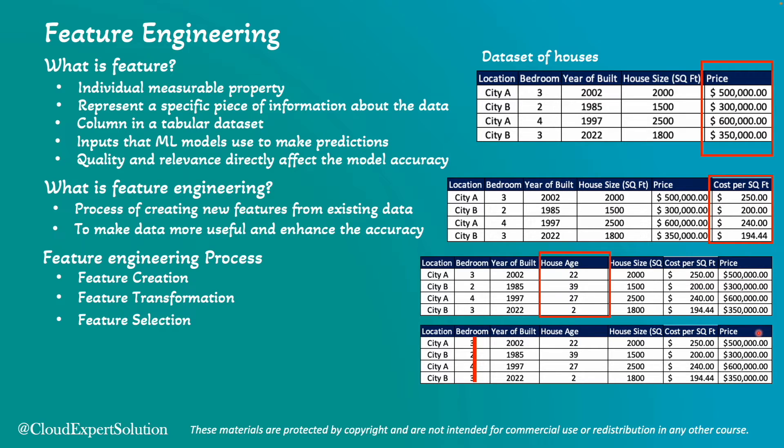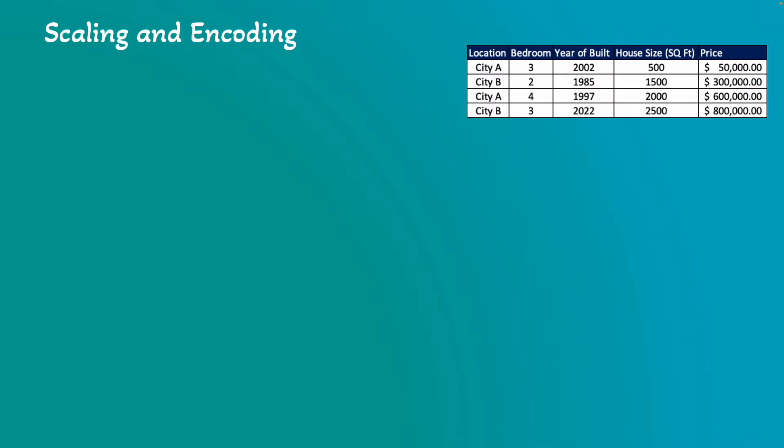Other feature engineering techniques are scaling and encoding and exploratory data analysis. Let's understand scaling first. In our sample dataset, house price varies widely. The lowest value is 50k, whereas the highest value is 800k.